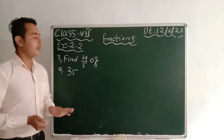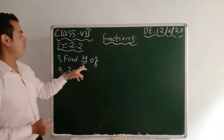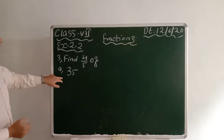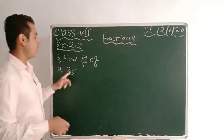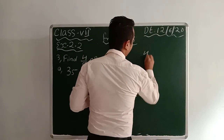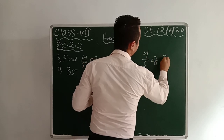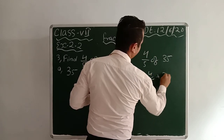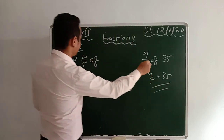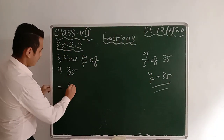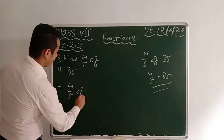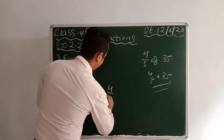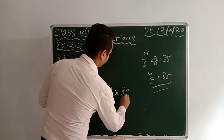Okay, question number 1 and 2 I did. Now number 3: Find 4/5 of the numbers. Number A is 35. So 4/5 of 35 means 4/5 into 35.